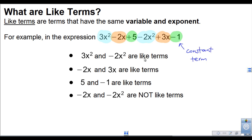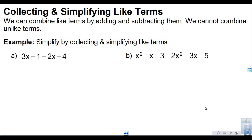It's important to figure out which ones are not like terms. For example, negative 2x and negative 2x squared are not like terms because even though they both have x, one has an exponent of 2 and the other has an exponent of 1. We can group and combine like terms, but we cannot combine unlike terms.